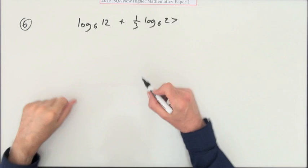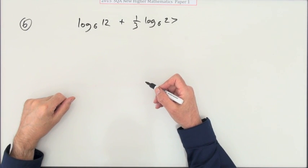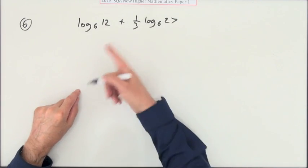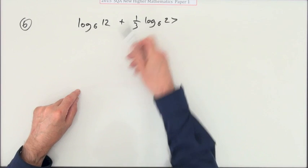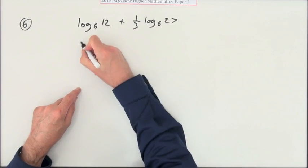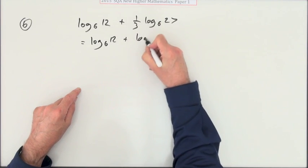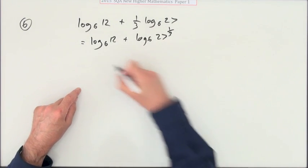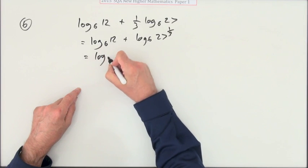Number six from paper one of this 2015 New Higher says evaluate this. Well, you know your laws of logs—you could add them, but not with that multiple in there. So the first thing we'll do is just pop that power back up: log₆ 12 + log₆ 27^(1/3). What am I rewriting here? I don't actually need to write all this again.